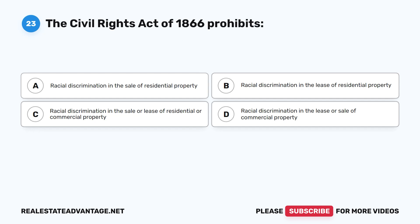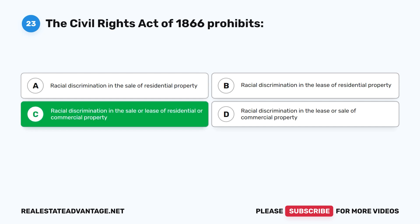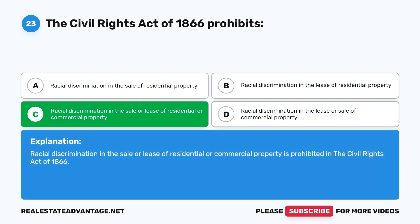Question 23: The Civil Rights Act of 1866 prohibits what? The correct answer is C: Racial discrimination in the sale or lease of residential or commercial property. The Civil Rights Act of 1866 prohibits racial discrimination in the sale or lease of commercial property.